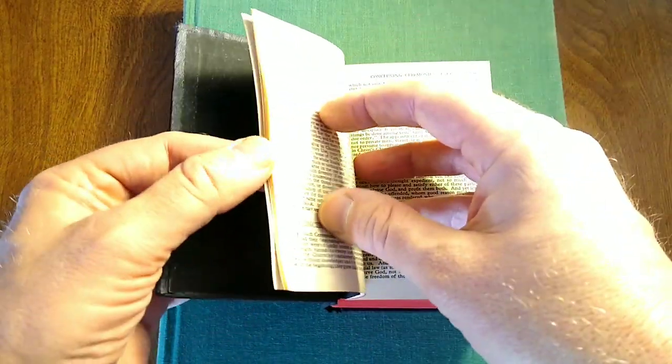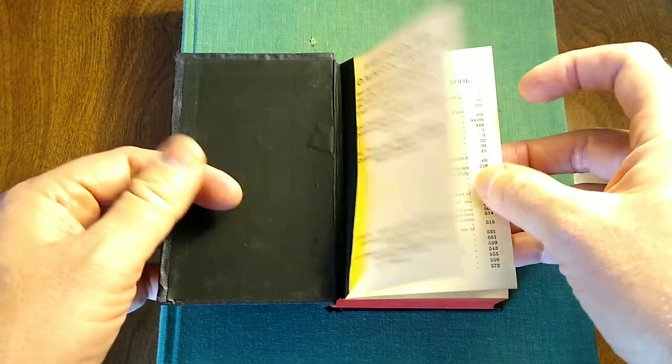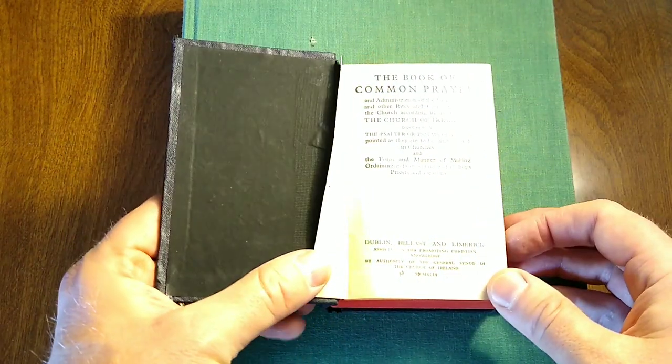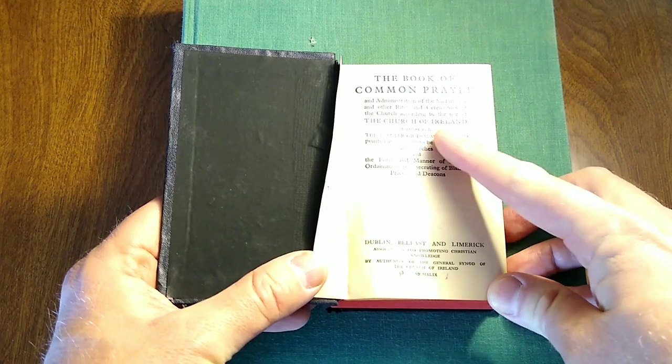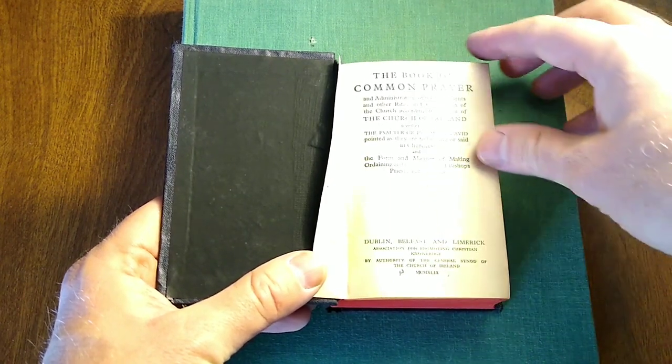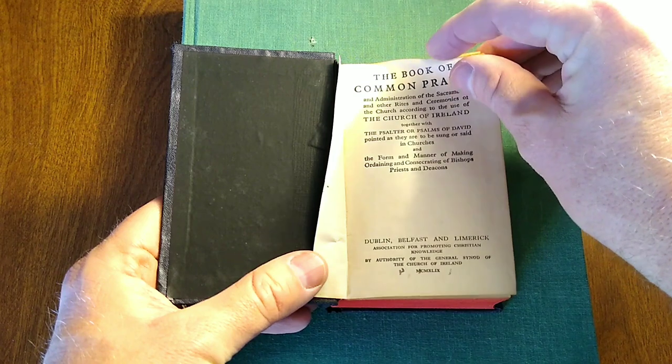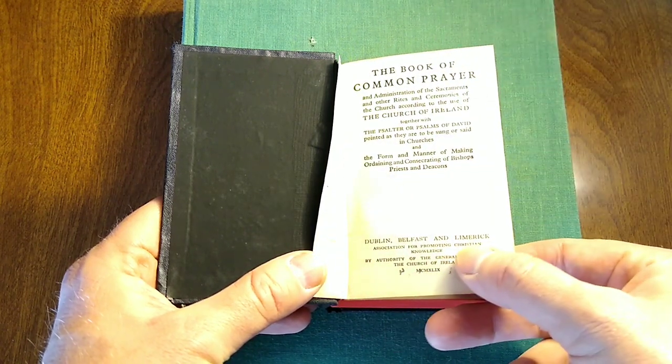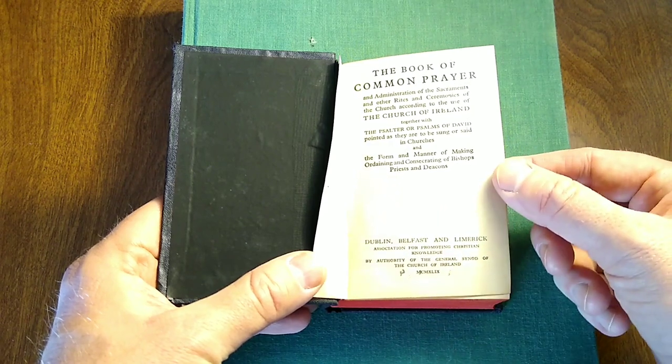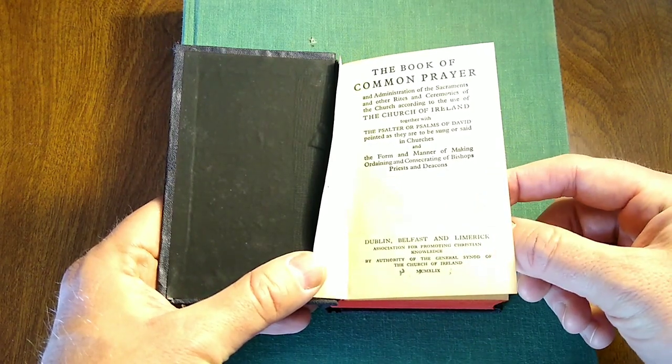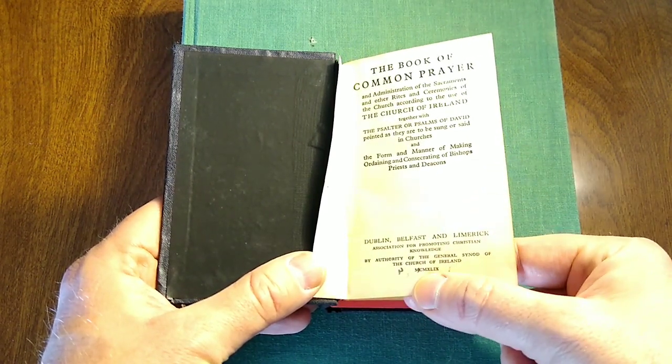This is the Book of Common Prayer, Administration of the Sacraments, etc., according to the use of the Church of Ireland. Dublin, Belfast, and Limerick: Association for Promoting Christian Knowledge, by authority of the General Synod of the Church of Ireland, 1949.